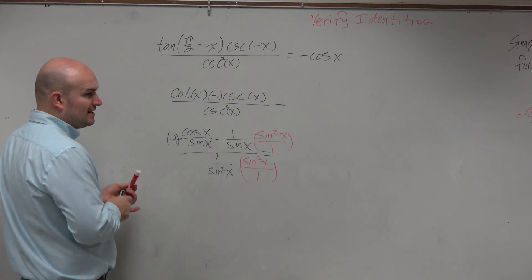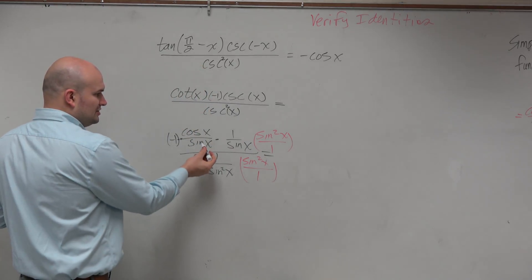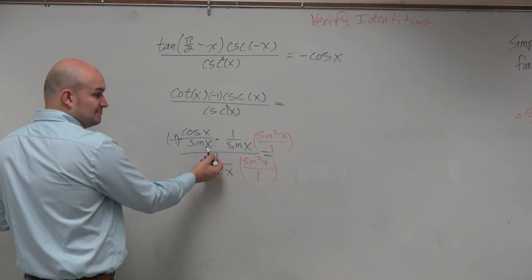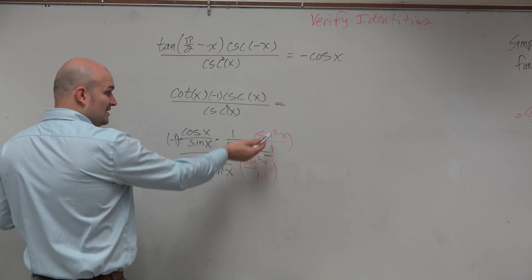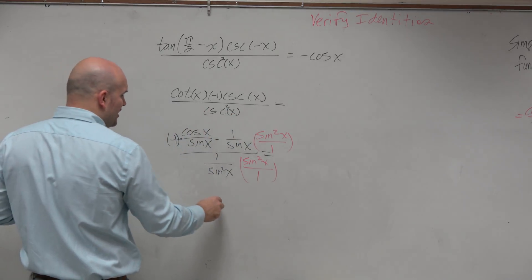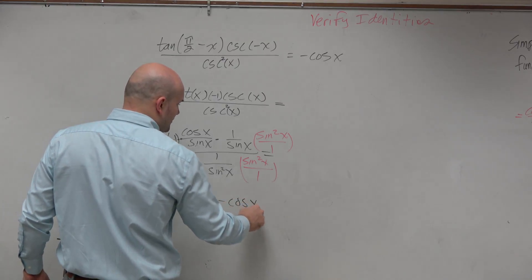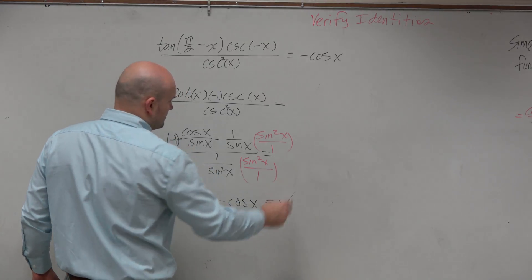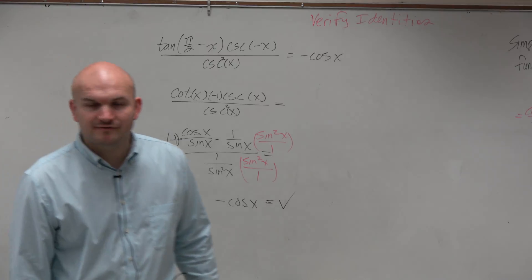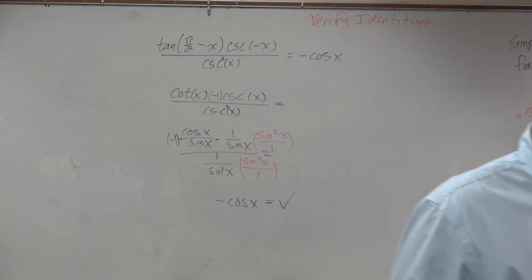And obviously, anything multiplied by a reciprocal is just going to go to 1. Do you guys see how the sine of x times sine of x would be sine squared of x in the denominator, sine squared of x in the numerator? And holy moly, look what just happened. I get negative cosine of x, which is the same thing on the other side.